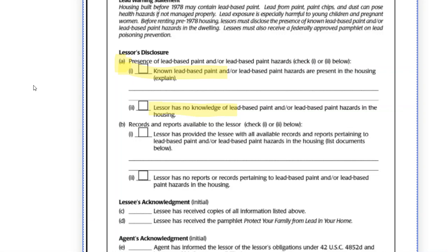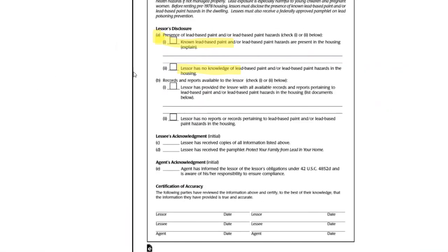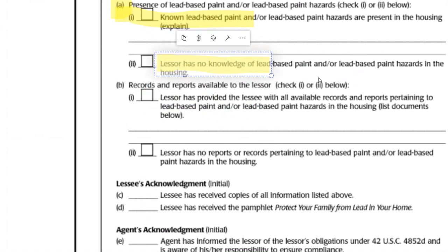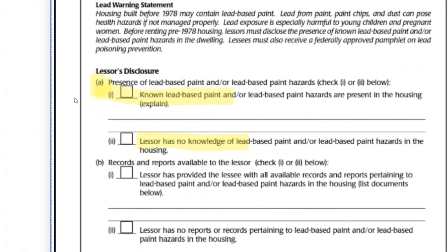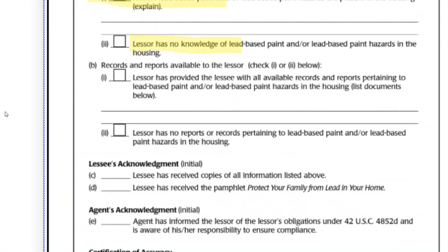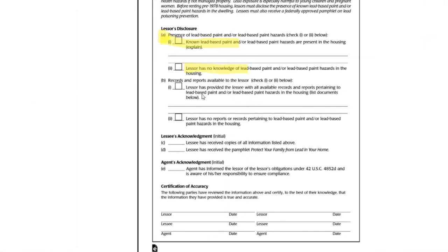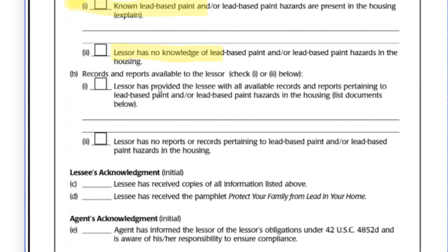This particular one I've got here is from my personal file and deals with landlords because we have a property management. If you notice, it says 'lessor' instead of 'seller.' The same form works for both buyers and sellers as it does for landlords and tenants — they just swap out the words. The second section says either the lessor has provided all of the records or has no records. It does not say that there are no records — either I don't have any or I've provided some. Notice that A1 and 2 and B1 and 2 typically go together.